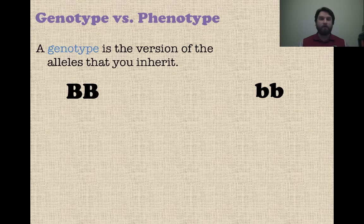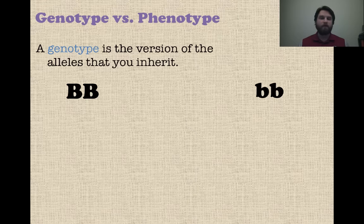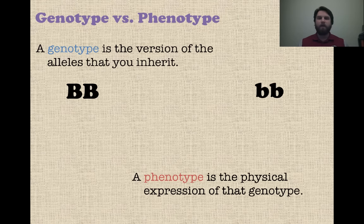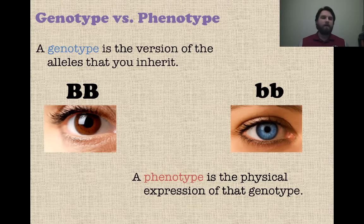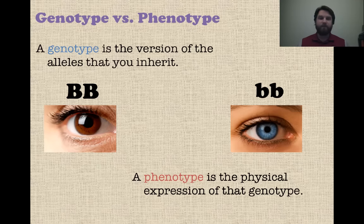Finally, we look at the difference between genotype and phenotype. Genotype means quite literally the version of the alleles that you inherit — those are your genes. For example, homozygous dominant is two capital Bs, and homozygous recessive is two lowercase bs. The phenotype is the physical expression of that genotype — for eye color, homozygous dominant might give you brown eyes and homozygous recessive blue eyes. The capital B, capital B or lowercase b, lowercase b are your genotypes; brown or blue are your phenotypes. We get a lot of this from Gregor Mendel's early experiments.